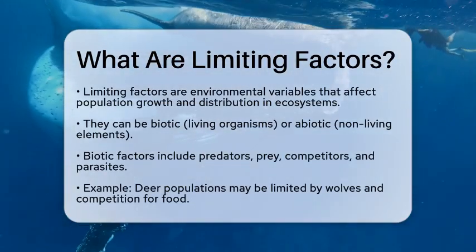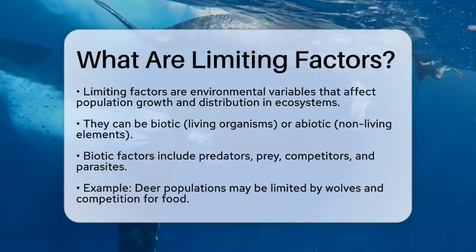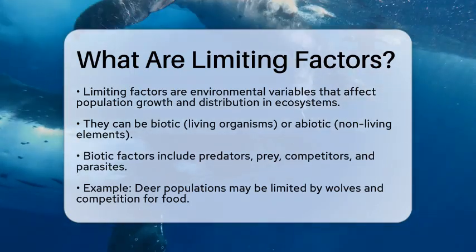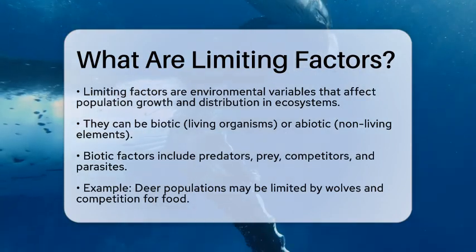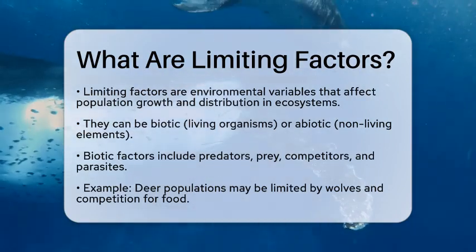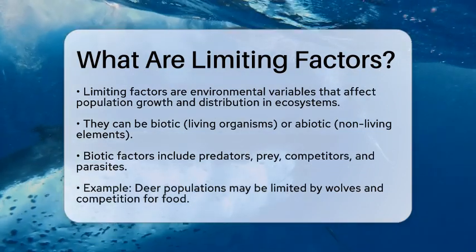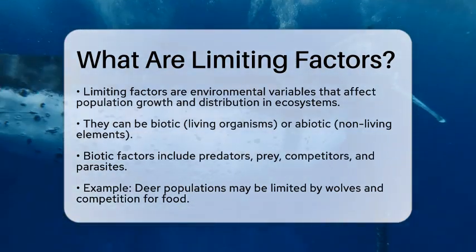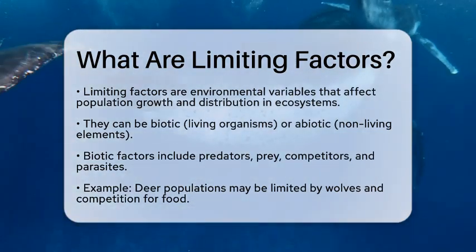These are environmental variables that restrict the growth, abundance, or distribution of a population within an ecosystem. They can be either biotic, which means they involve living organisms, or abiotic, which refers to non-living elements like sunlight and temperature.